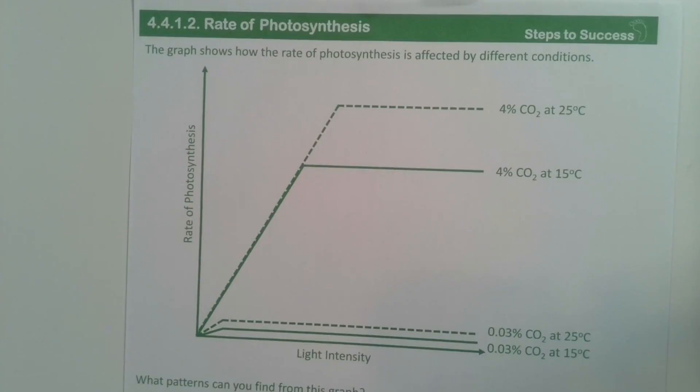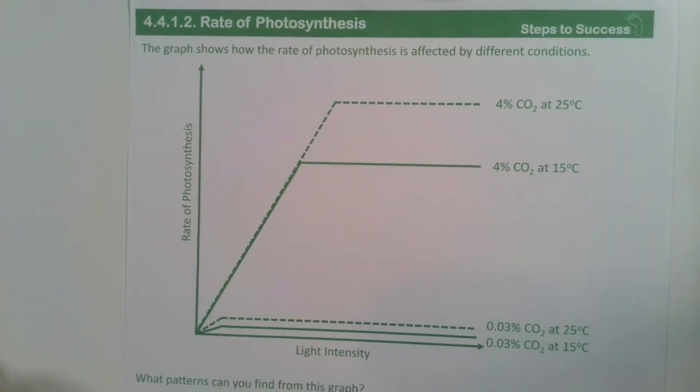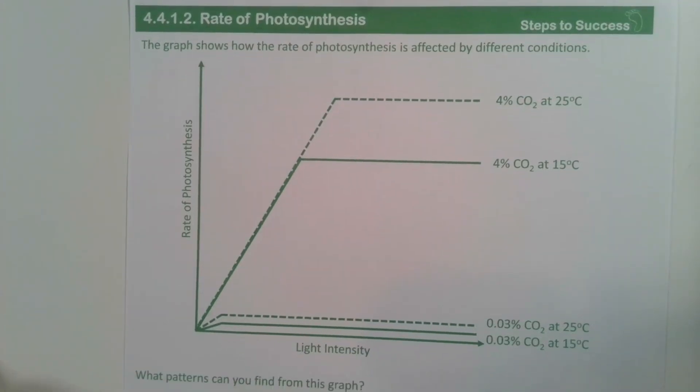Hello and welcome to this video where we're going to be looking at the rate of photosynthesis past paper questions. In this first question, the graph shows how the rate of photosynthesis is affected by different conditions. What patterns can you find from this graph?